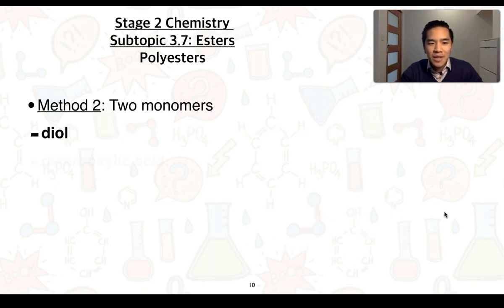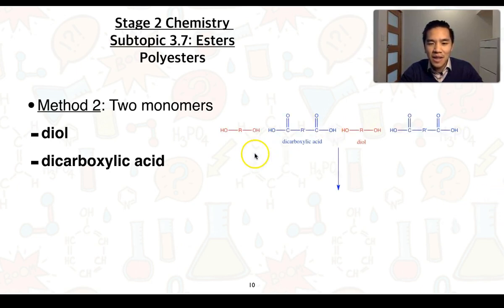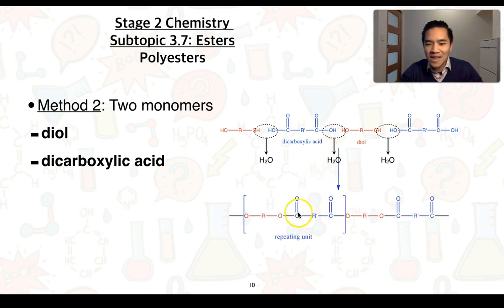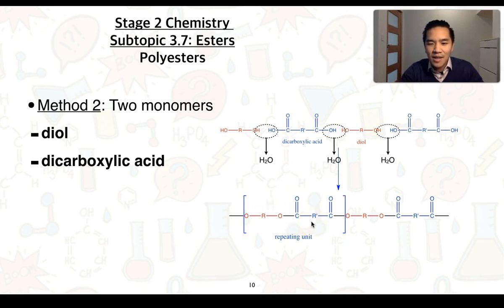The second method involves two monomers: a diol and a dicarboxylic acid. The carboxyl group and hydroxyl group associate, water is eliminated as a small molecule, and the freed bonds join together to form the ester functional groups. The repeating unit, shown in square brackets, may appear larger depending on the size of the R groups. The ester groups are again circled in the structure.